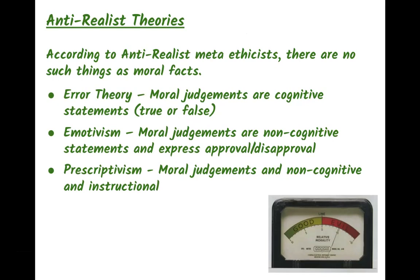According to anti-realist metaethicists, there are no such things as moral facts. There are three theories behind this. There's error theory, which says that moral judgments are cognitive statements — either true or false — but any statements about moral facts are actually all false. The second is emotivism, which says that moral judgments are non-cognitive statements that express approval or disapproval. The third is prescriptivism, which says that moral judgments are non-cognitive and instructional.